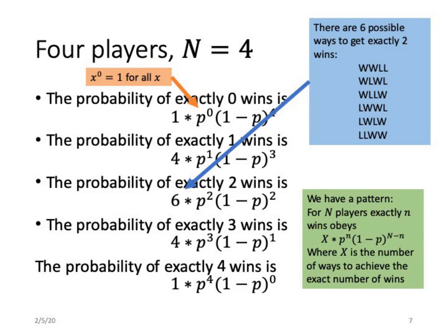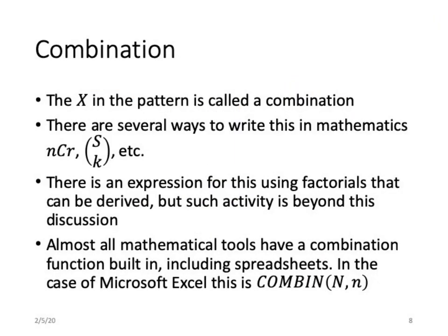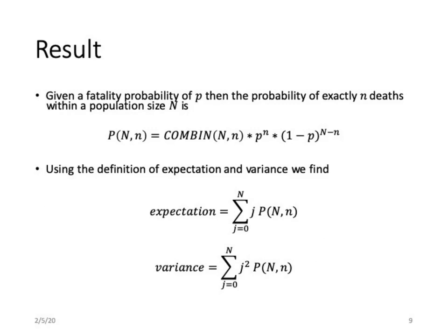In front of each term we need a means of counting the number of possible ways to achieve that outcome. For example, with four players and exactly two wins, there are six possible ways to achieve that. This counting function is called a combination. It can be expressed using factorials, but we won't derive that here. The key point is that this function is common in all mathematical toolkits and in Microsoft Excel it is called COMBIN.